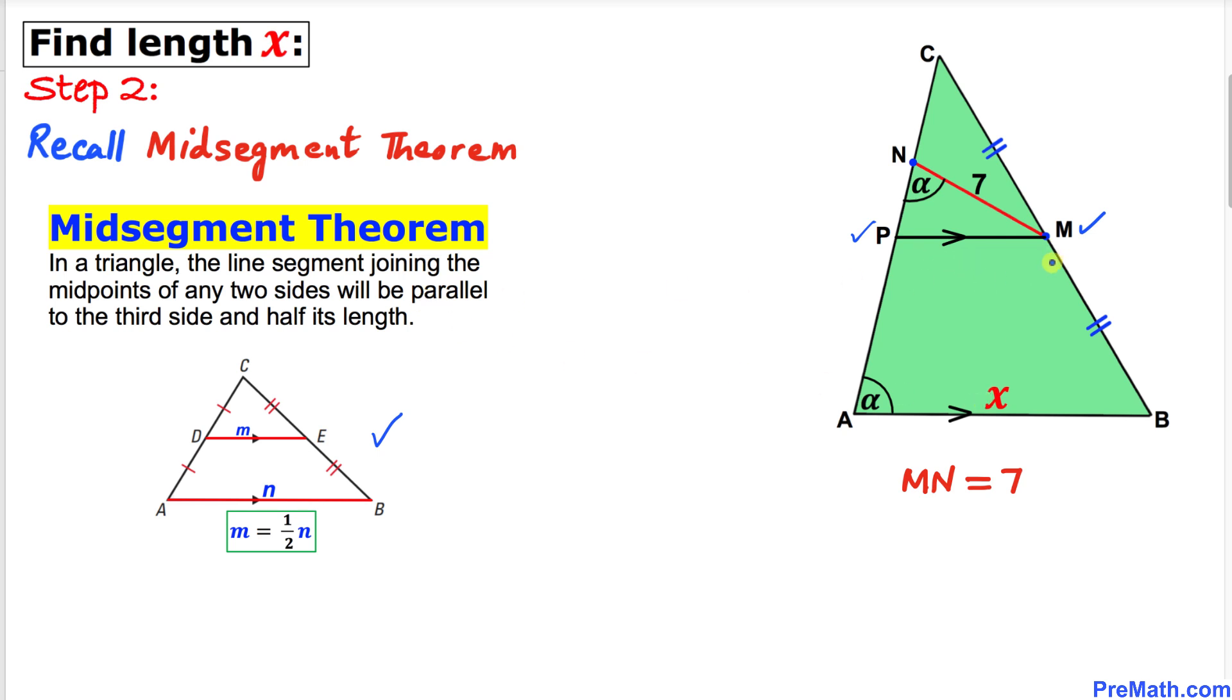Because according to this theorem, line segment AB is parallel to line segment PM. Moreover, according to this theorem, line segment AB is going to be twice as much as this line segment PM.